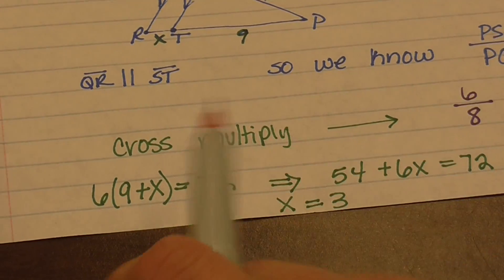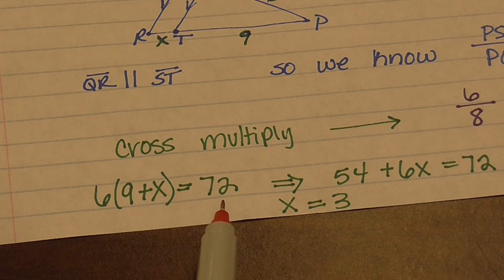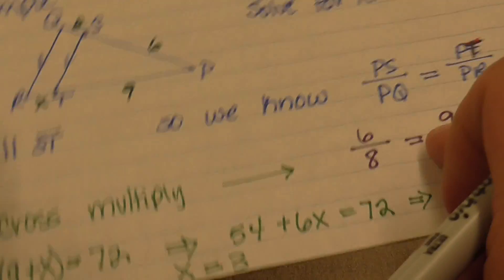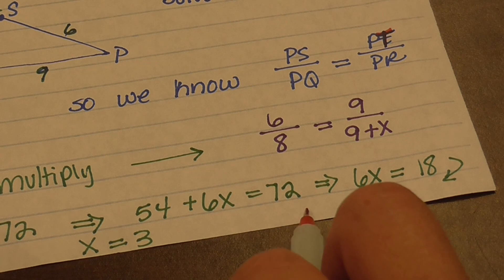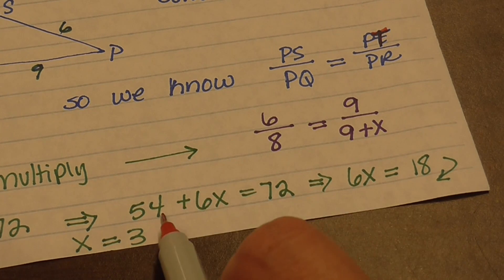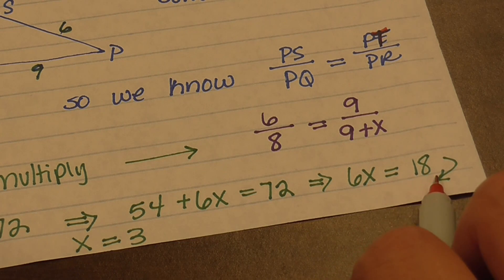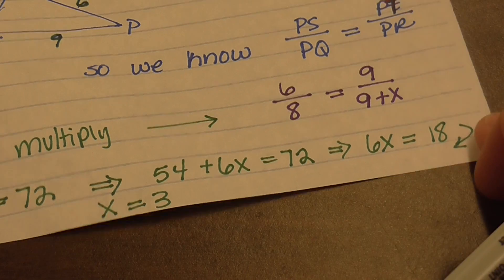Next, you cross multiply, so you end up with 6 times 9 plus X equals 9 times 8, which is 72. You can distribute the 6, and you get 54 plus 6X equals 72. You subtract the 54 from both sides, and you're left with 6X equals 18. Once you divide by 6, you're left with X equals 3.